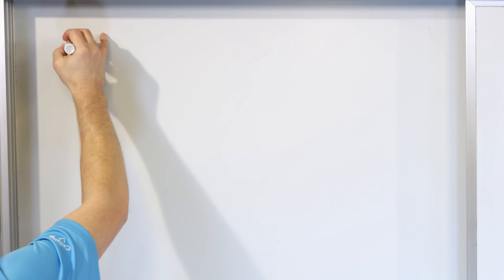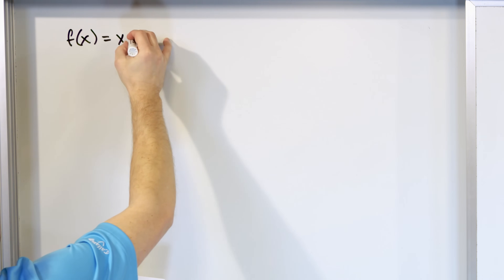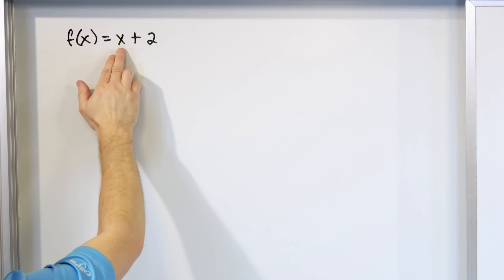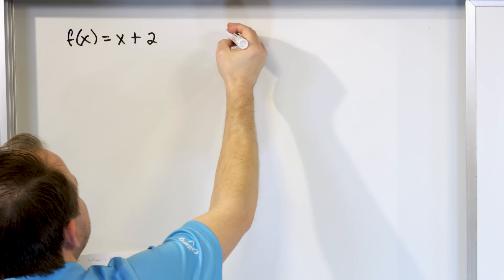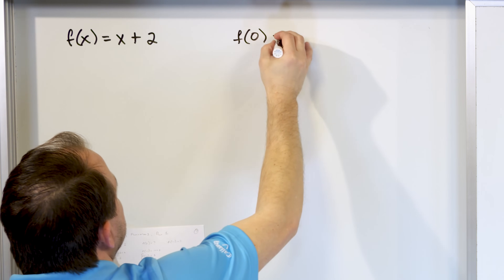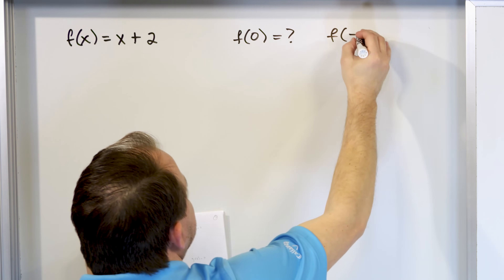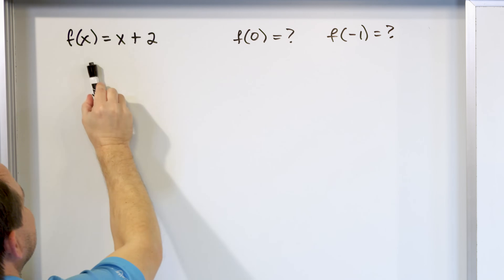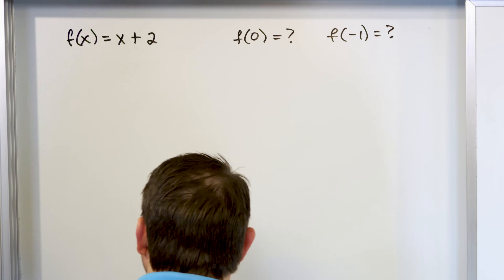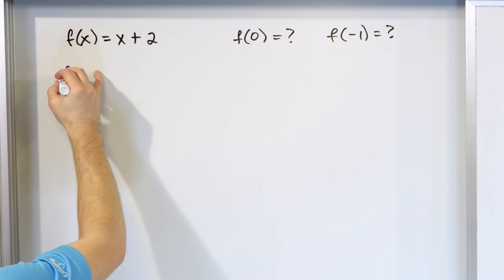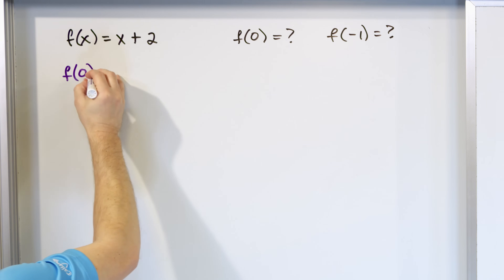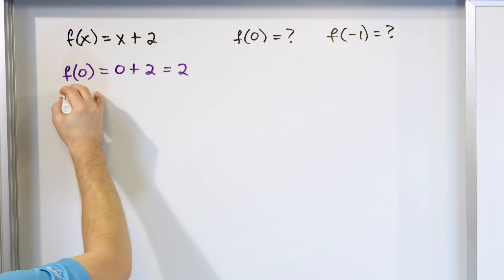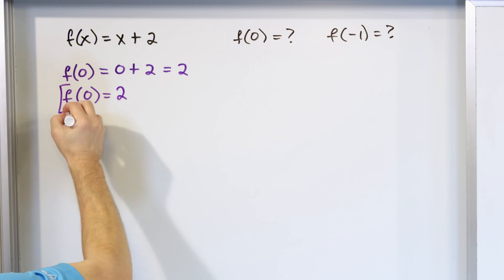So if you had a function f of x equal to x plus 2 — you should recognize this as a line, mx plus b — and we want to evaluate the function at x equals 0, we write f of 0, substitute 0 in for x, and get 0 plus 2, which is 2. So on your paper you write f of 0 is equal to 2.